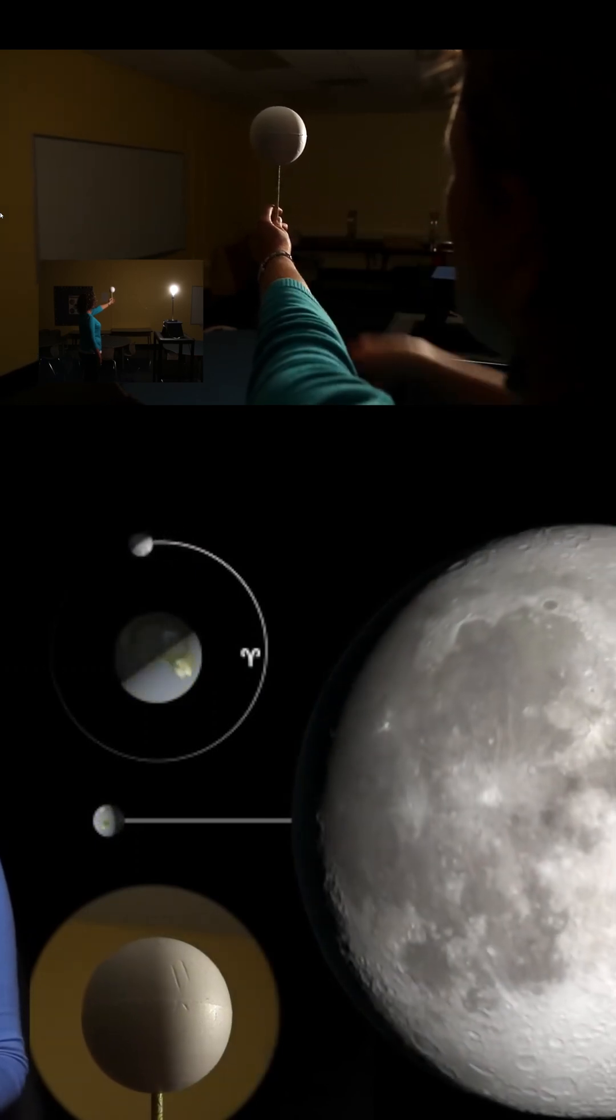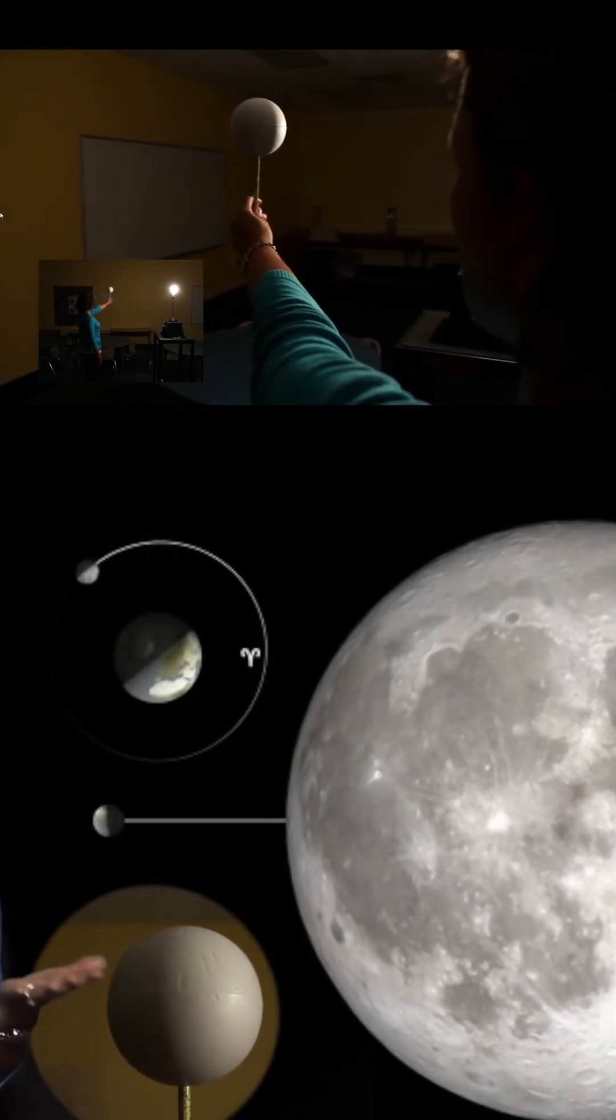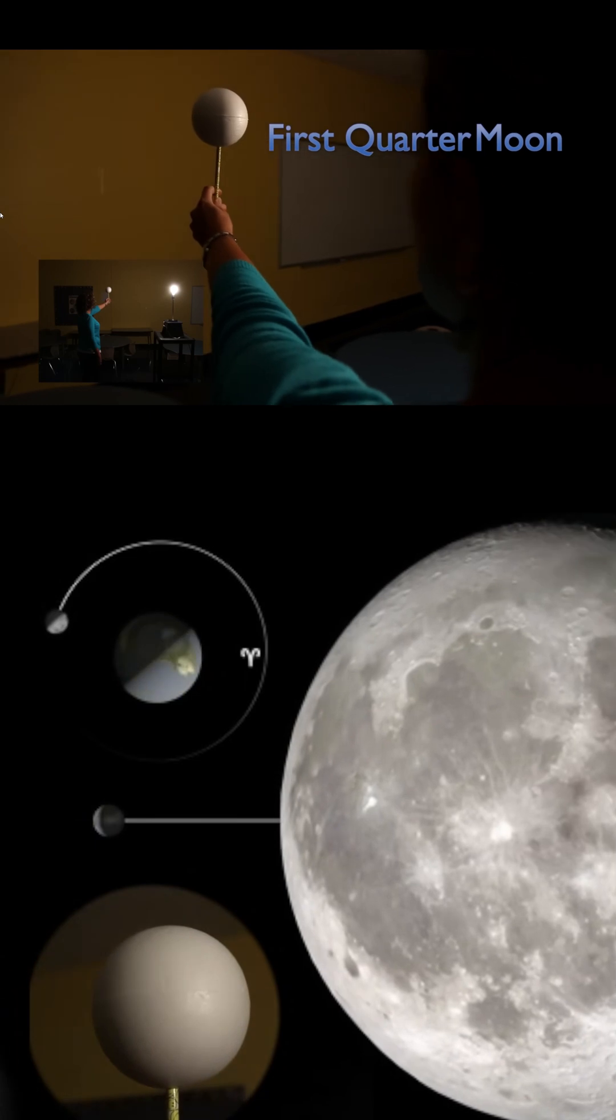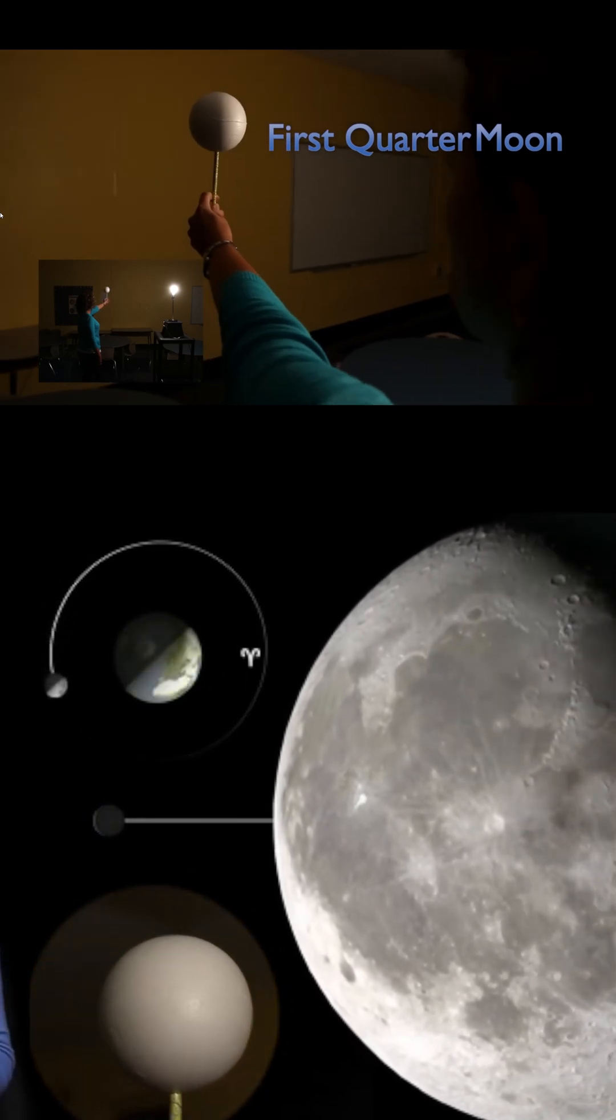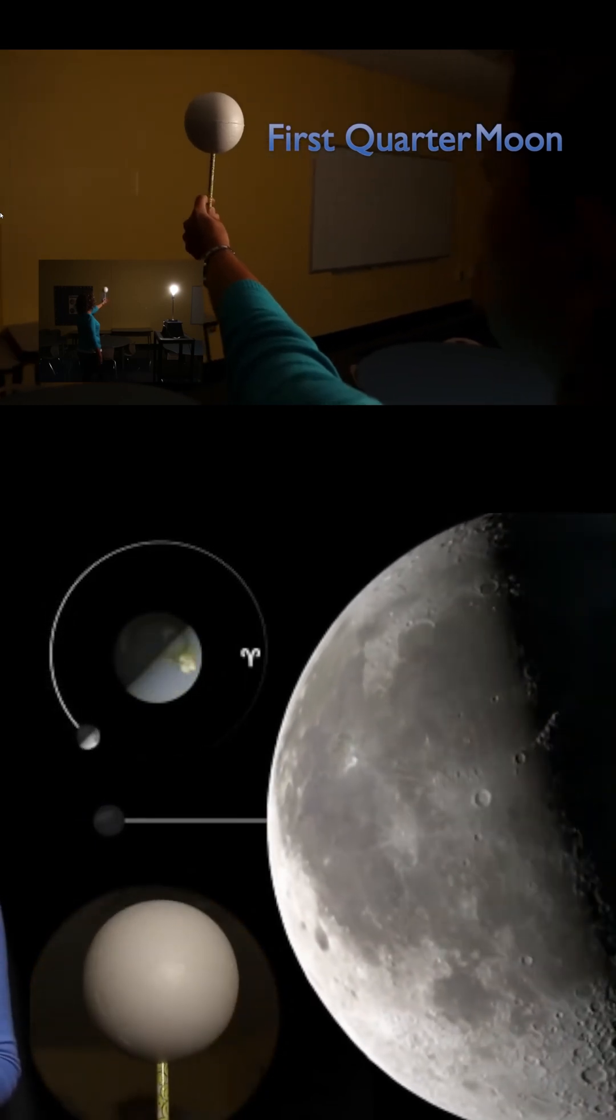As the moon keeps orbiting, we can see more and more of that lighted side. We see half of the lighted half, which is a quarter moon. In this case, a first quarter moon.